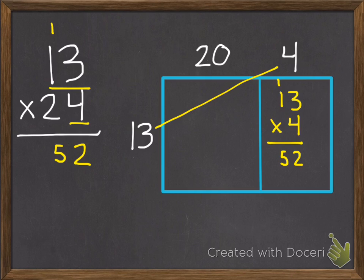We do the same exact thing in standard method. So we kind of pretend like that 2 in our 24 is gone. We just do the underlying parts in yellow. So we do the 13 times the 4. 3 times 4 is 12, and 4 times 1 is 4 plus 1 is 5. Then we multiply our tens. So that 2, which is really a 20, times 13.